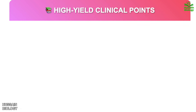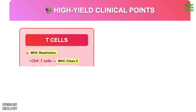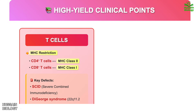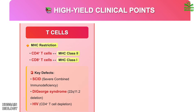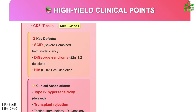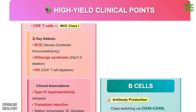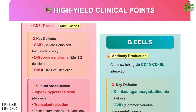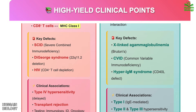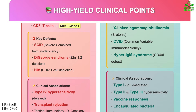Some high-yield points: regarding MHC restriction, CD4+ T-cells interact via MHC class 2, whereas CD8+ T-cells interact via MHC class 1. Key T-cell defects include SCID, DiGeorge syndrome, and HIV; T-cells also have a role in type 4 hypersensitivity and transplant rejection. Key B-cell defects include X-linked agammaglobulinemia, CVID, and hyper-IgM syndrome; associated hypersensitivities include types 1, 2, and 3.